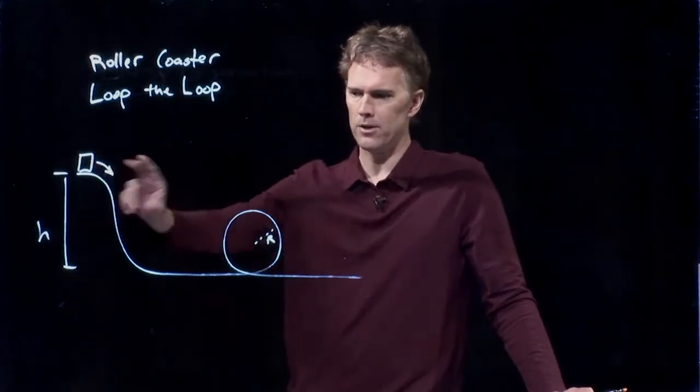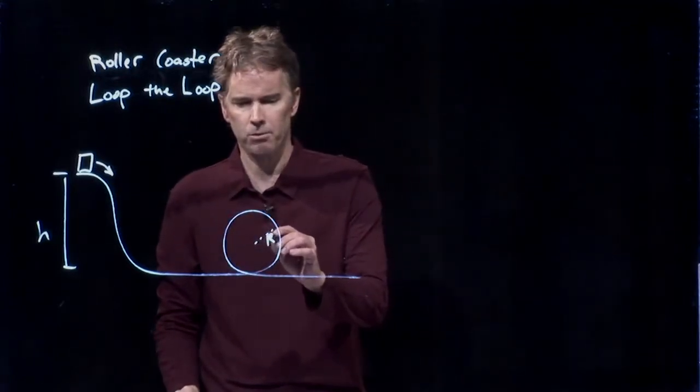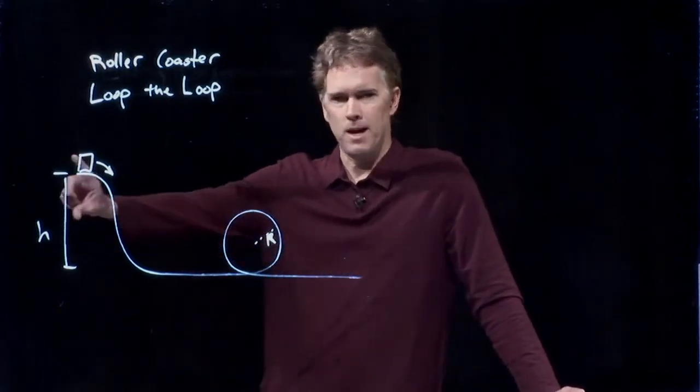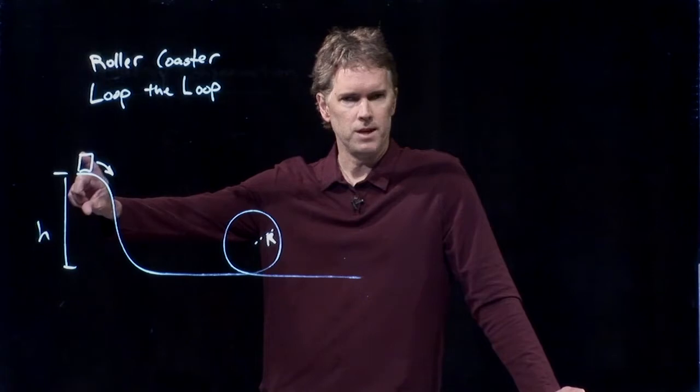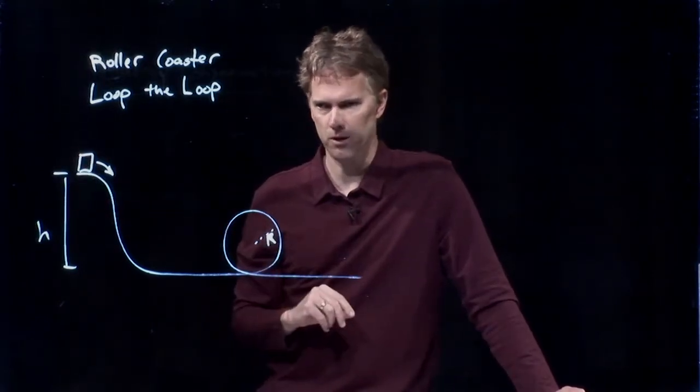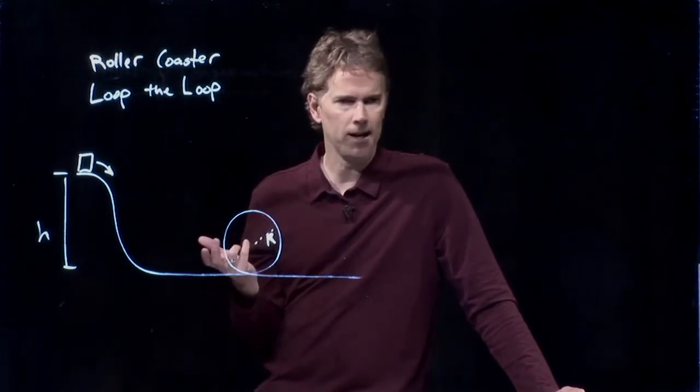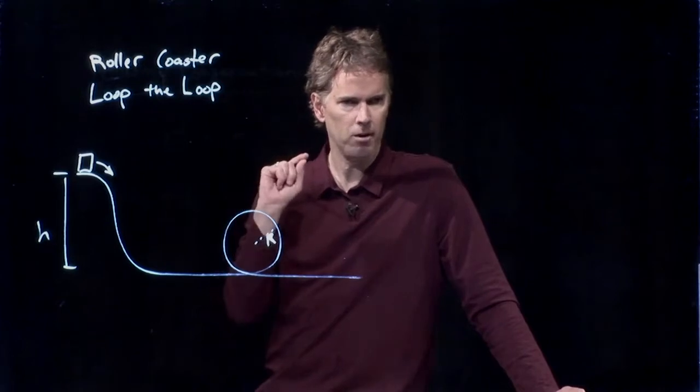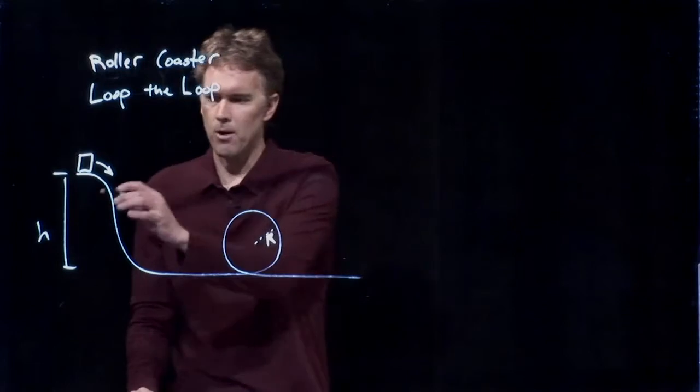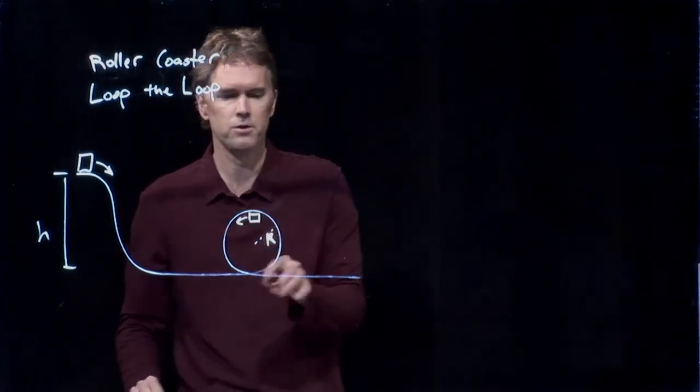Right off the bat, that should tell you that the height of any hill after the first one, including a loop of radius r, none of that can be higher than the initial hill, right? Because if you had a bigger hill, you wouldn't be able to get all the way up it if you are truly coasting. So think back to when you were a kid riding on roller coasters. That first hill that you go up, it's always the biggest.